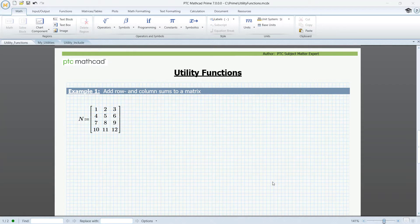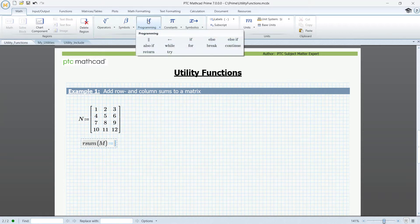Here we have a matrix called N. To this matrix, we want to add row sums and column sums, and we'll write a program to do that. First, the row sums. So we'll define a function called rowSum, m colon equal, and insert a program structure.